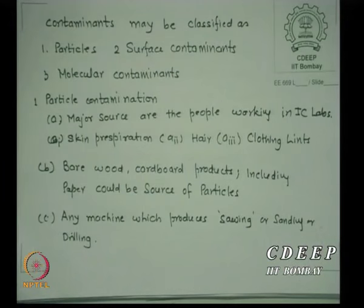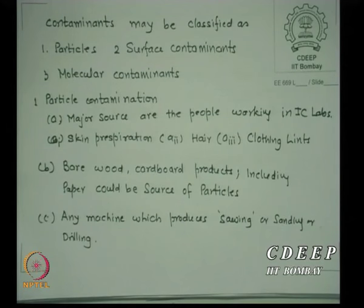What is the problem in a normal room? A normal room has many contaminants. They may be classified as particles, surface contaminants, and molecular contaminants. So there are three kinds of contaminants seen in any volume of space. If we want to fab a chip, we need to somehow control all of them. Here is a list of contaminants.